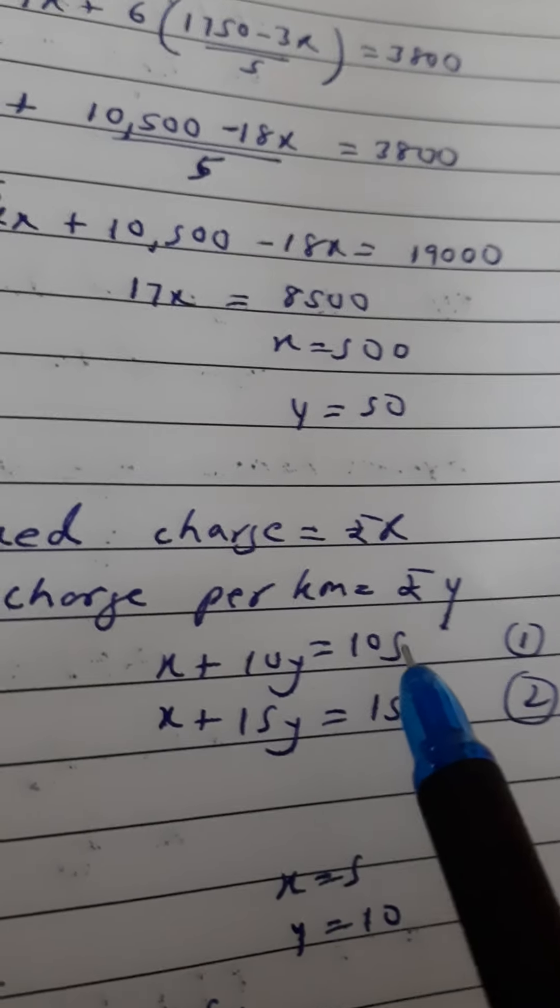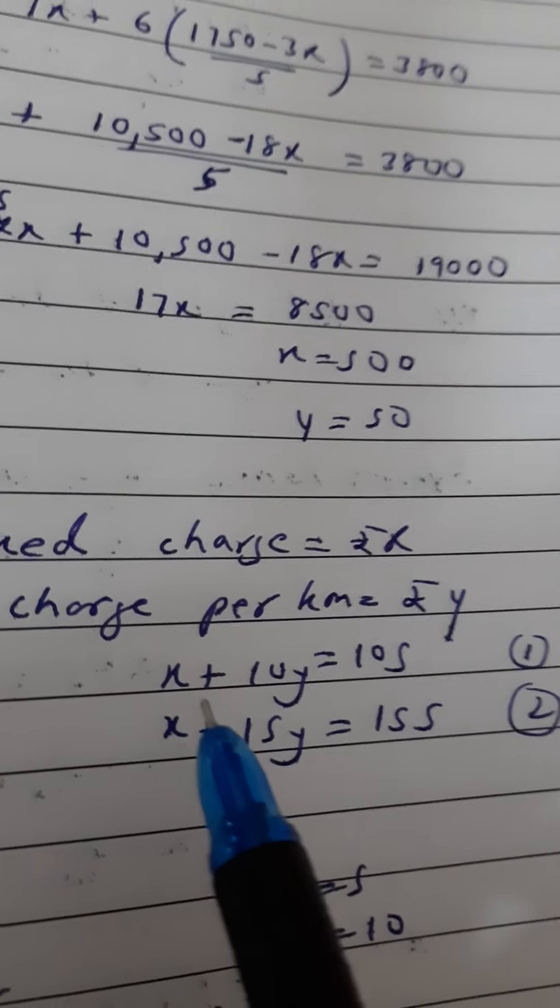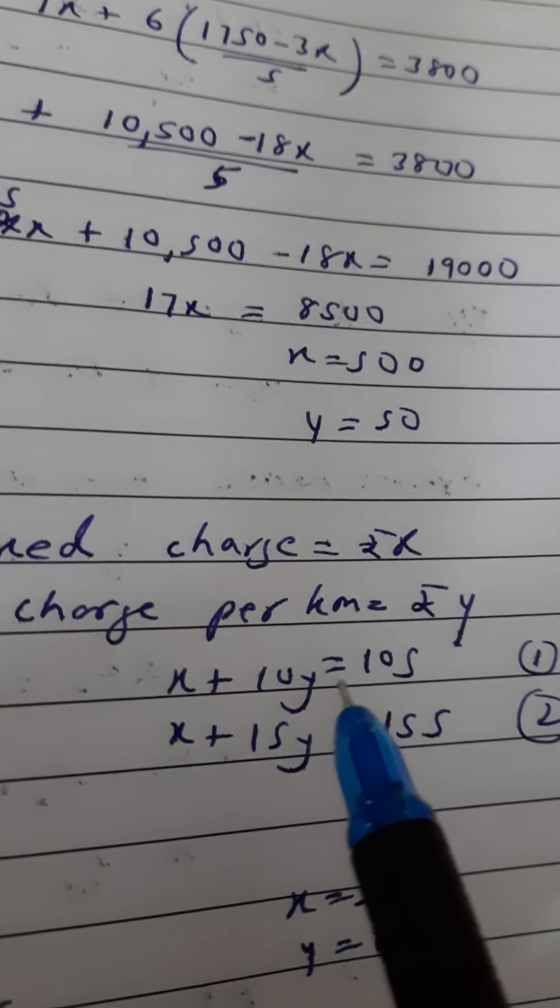He is traveling 10 kilometers and has to pay 105 rupees. So the equation is x plus 10y equals 105.